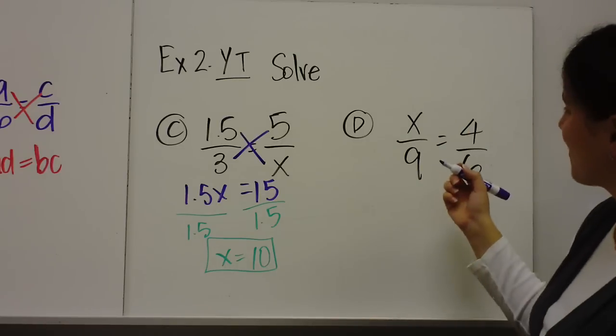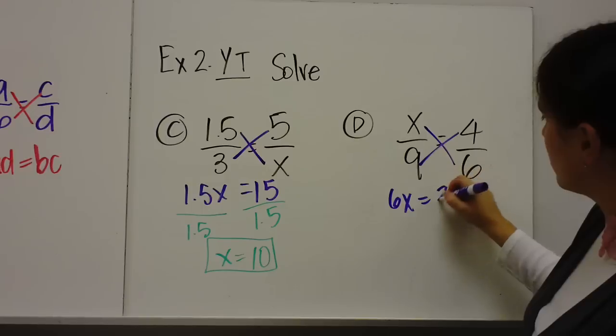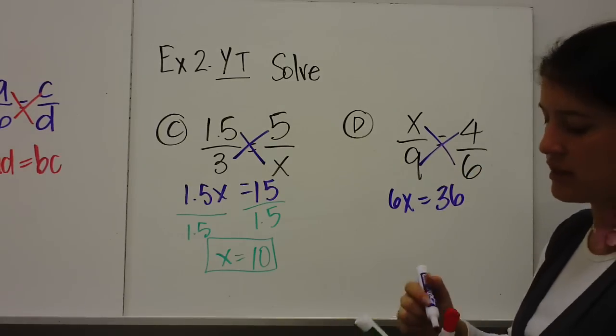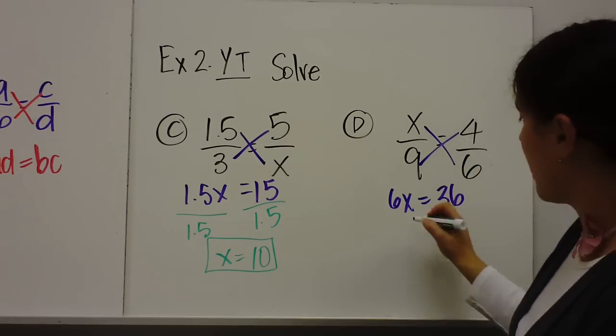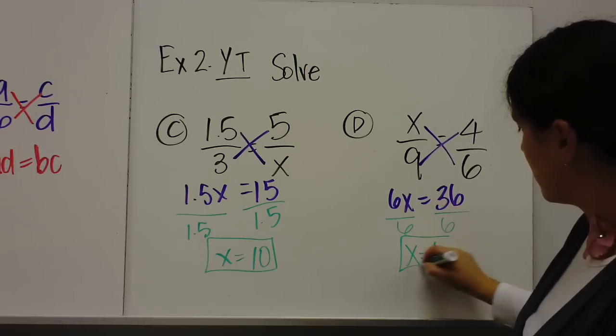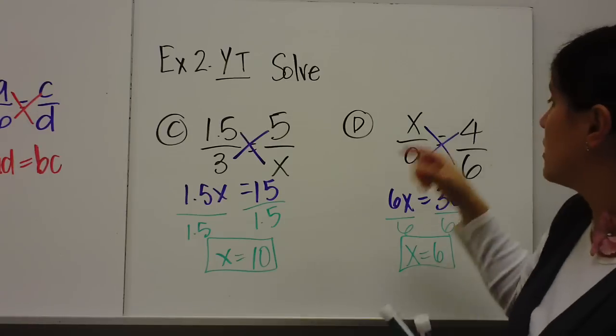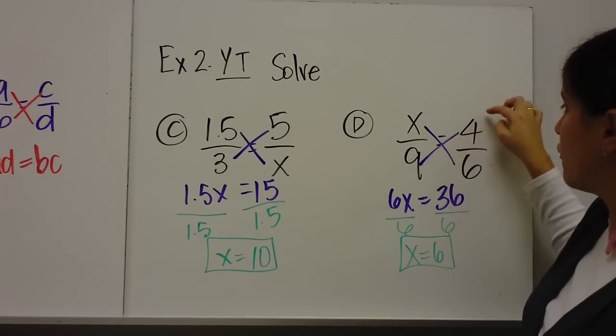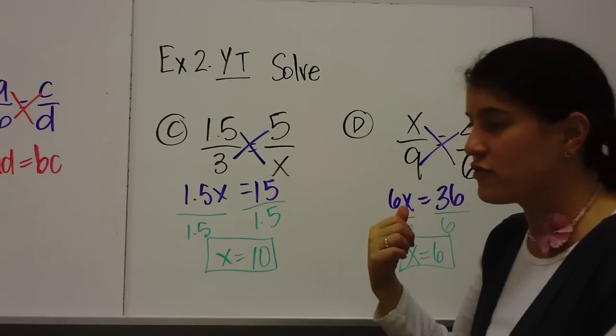Let's do another one. I'm going to cross multiply 6x equals 36. Oh, this is an easy one. 6x equals 36. We divide both sides by 6. And x equals 6, which means our ratio 6 to 9 is equal to 4 to 6. Two equal ratios. I hope you got those right.